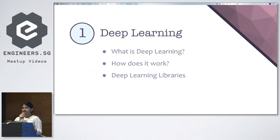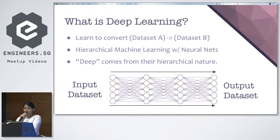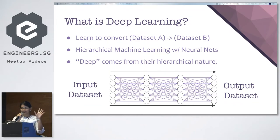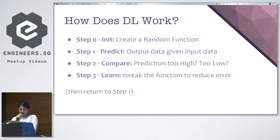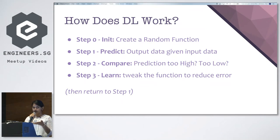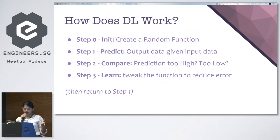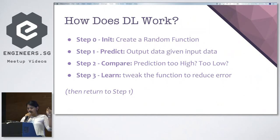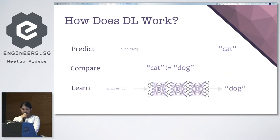The first component is deep learning. Deep learning is, quite simply put, hierarchical machine learning with neural networks. Deep learning works like this: first you initialize a random function, then you make a prediction based on some input data. You take that prediction and figure out if it's too high, too low, or just right. You learn from this prediction, make an adjustment to the neural network, and go back to step one — predict, compare, learn — and repeat this again and again until you get a satisfactory model.